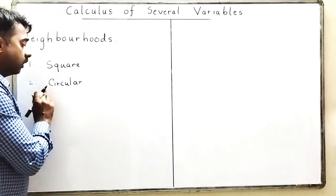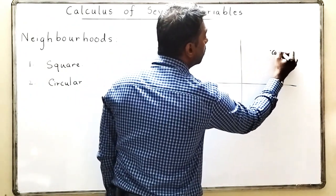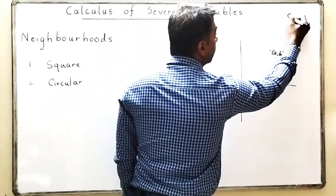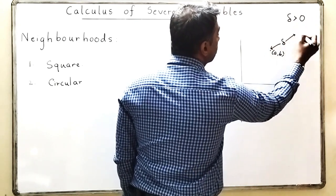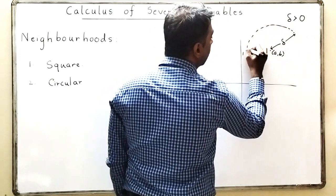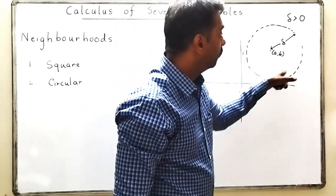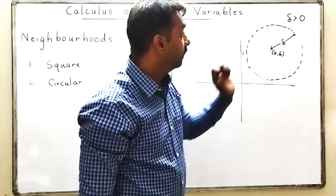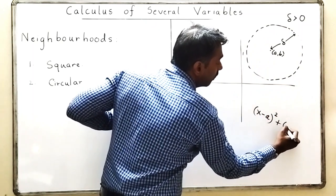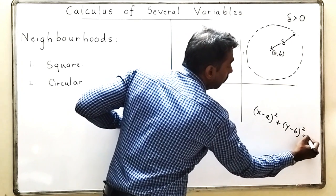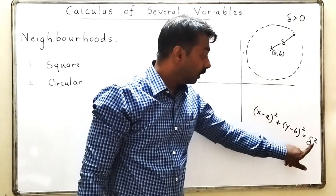Now we will discuss what is a circular neighborhood. Again I will go in the xy plane. I will take a point P which is (a, b) and take a positive radius delta about that point, and draw a circle of radius delta about point (a, b). The equation of this circle by center-radius form is: x minus a whole square plus y minus b whole square equals delta square.